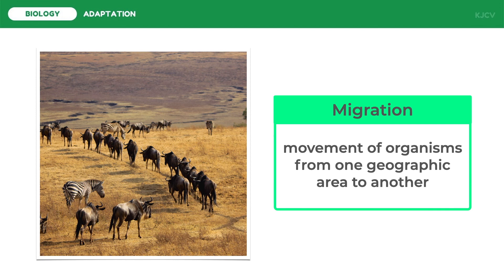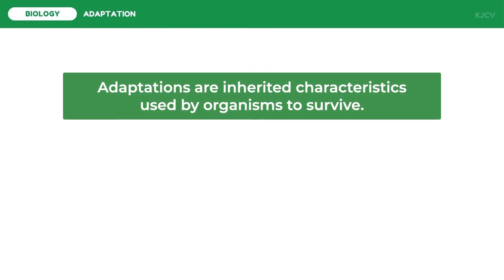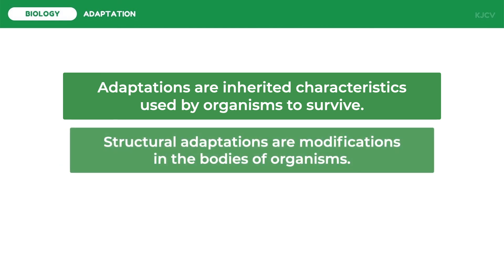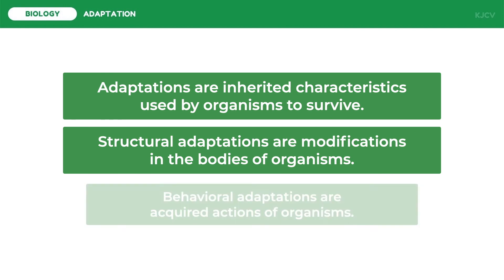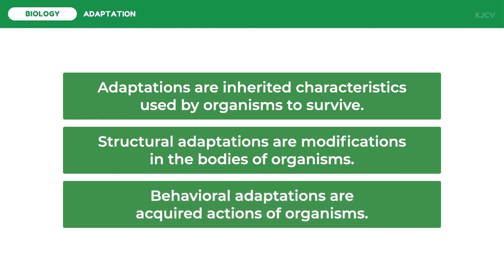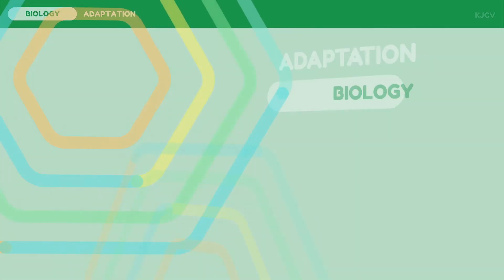To conclude this lesson, let us review the following key points. Adaptations are inherited characteristics used by organisms to survive. Structural adaptations are modifications in the bodies of organisms. And lastly, behavioral adaptations are acquired actions of organisms. This ends our discussion on adaptation.